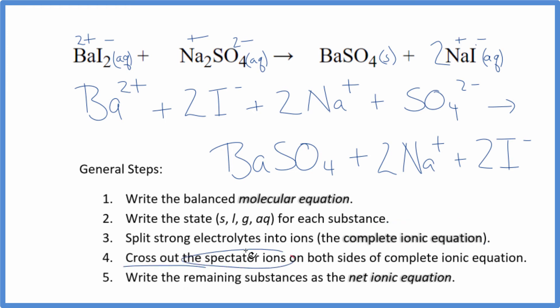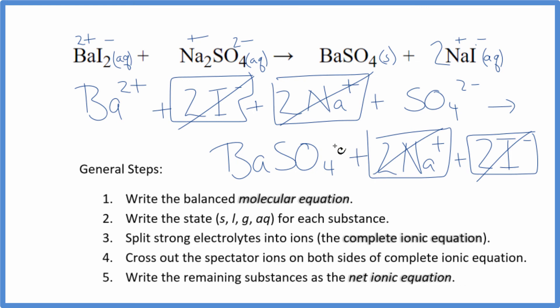Now we can cross out the spectator ions. They're on both sides. I see that I have these two iodide ions here in the reactants, and I have two iodide ions in the products. Those are spectator ions. We'll get rid of those. I have two sodium ions here, and again in the products, spectator ions. Get rid of those.